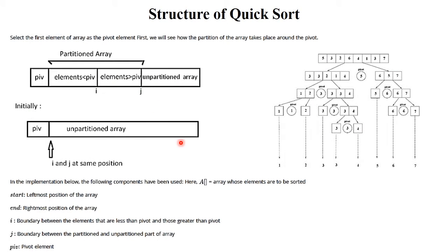Now let's look at the structure of quick sort. Select the first element of the array as the pivot element. We will see how partitioning takes place around a pivot. The first element is the pivot, and all remaining elements are unpartitioned at the initial stage. While implementing quick sort, two variables are used: I and J — I for elements less than pivot and J for elements greater than pivot.